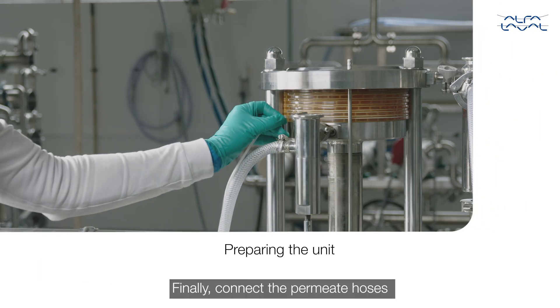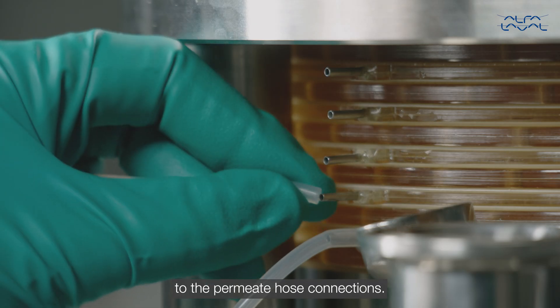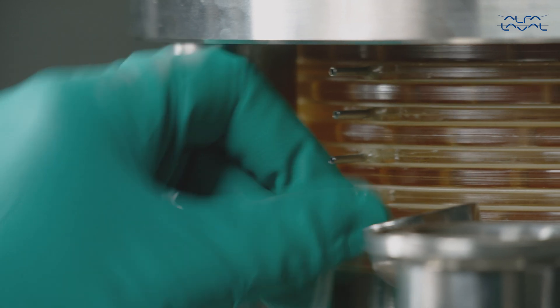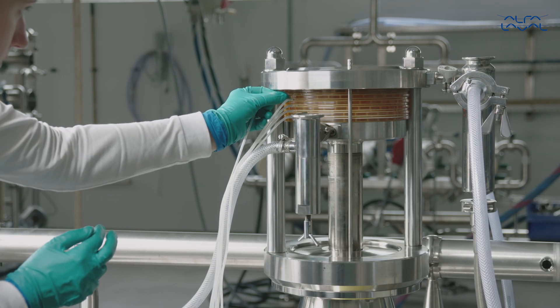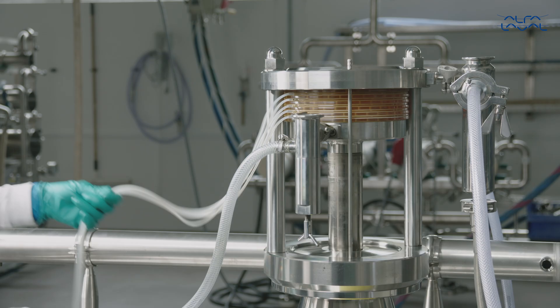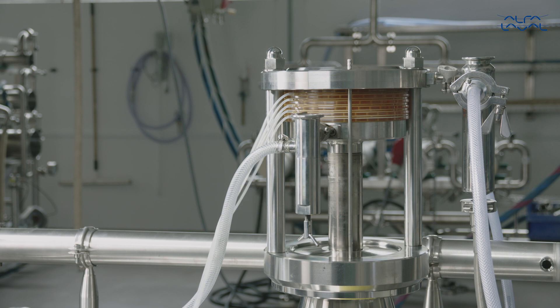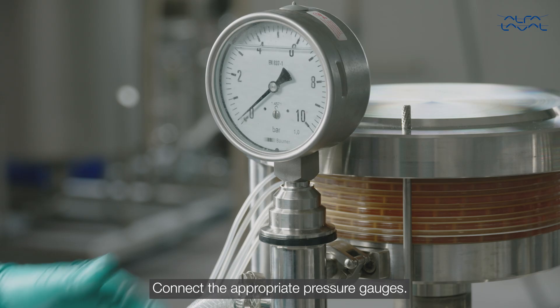Finally, connect the permeate hoses to the permeate hose connections. Connect the appropriate pressure gauges.